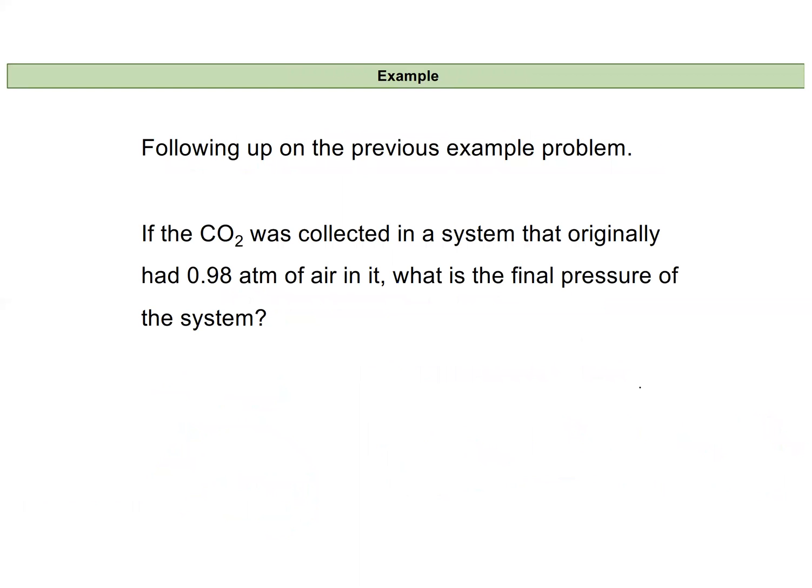Let's look at an example following up on what we did previously. In our previous example problem we were collecting carbon dioxide in a container that had nothing in it, so it was at zero atmospheres. What if instead it had 0.98 atmospheres of air in it and then we collected the carbon dioxide? In our previous ideal gas law problem we calculated that 4.893 atmospheres of carbon dioxide were collected.